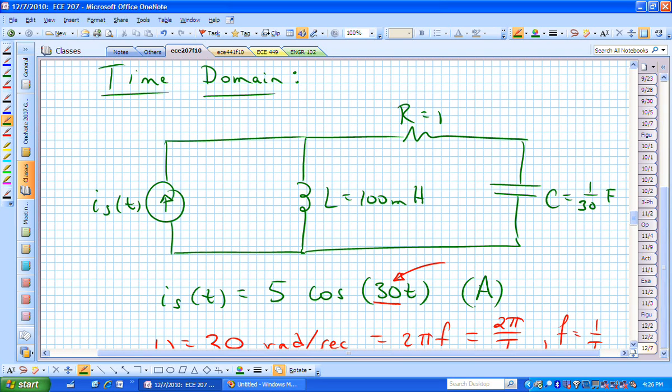So you don't have to convert to RMS to do phaser problems. That's correct. It's more convenient to convert to phasers when you start doing power problems, because then you don't have to keep track of these square roots of twos and one-halves. That's when it's convenient to find RMS units, is when you're doing power problems.